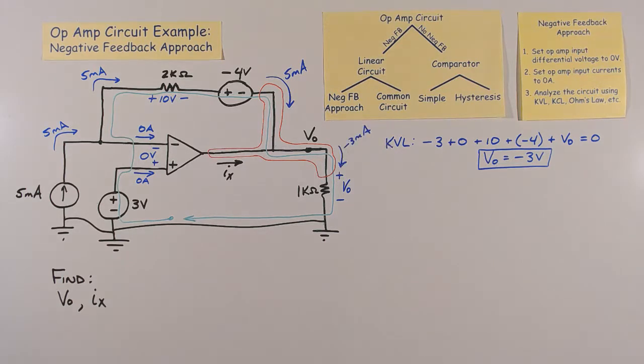Note that the reference direction for this current is down through the resistor, since V0 is defined with the positive polarity at the top of the resistor. The current entering the node up through the resistor is positive 3 milliamps.